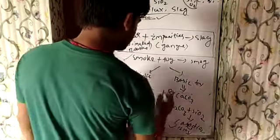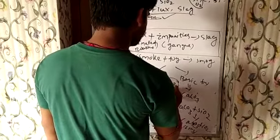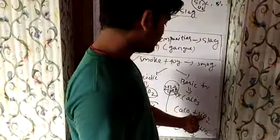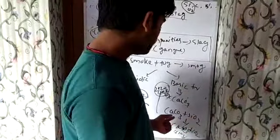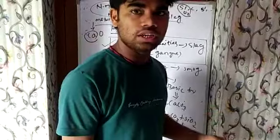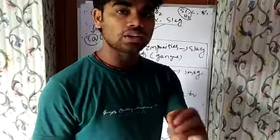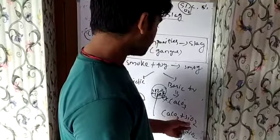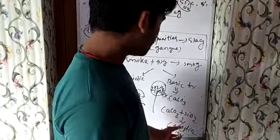This question has already appeared in 2020 CHSC exam. The reaction is: CaO + SiO2 → CaSiO3. We know CaO is a basic flux because calcium is a metal, and it reacts with silicon dioxide, which is a non-metallic oxide and acidic in nature. So they form slag.